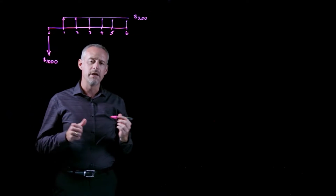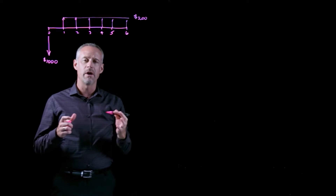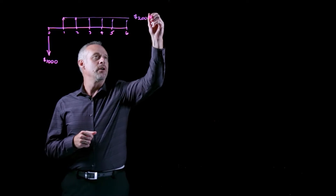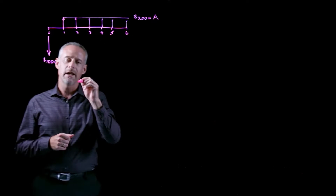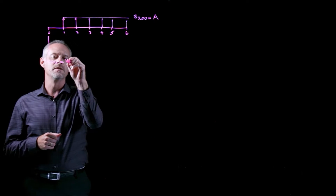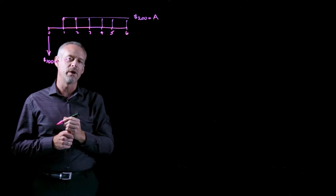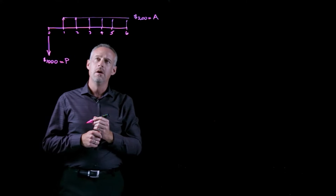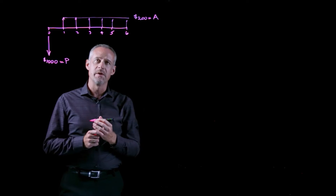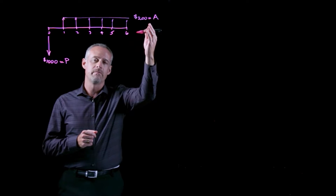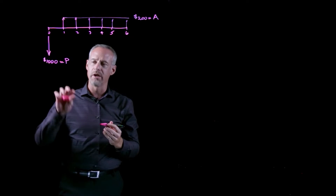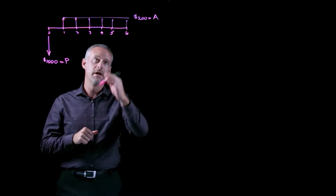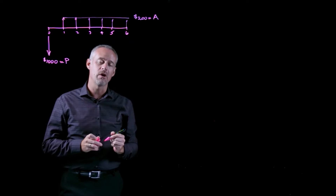By this point in this course, we should be able to recognize right away that our $200 is an annuity, and that the $1,000 is a P, or a present worth. Usually, what happens in an engineering economics problem is that we're given an A and an interest rate and asked to solve for P, or we're given a P and an interest rate and asked to solve for A.